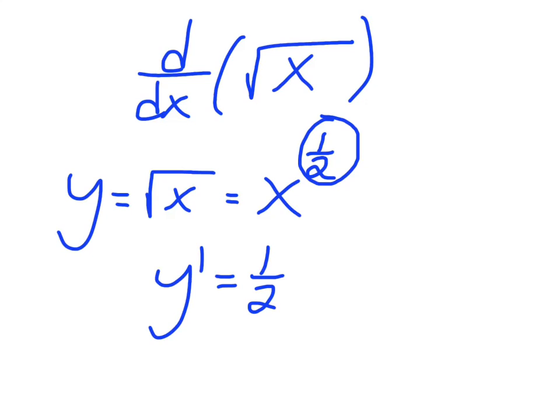And we take whatever we have there, x. And then what we're going to do is we're going to just subtract 1 off the exponent.